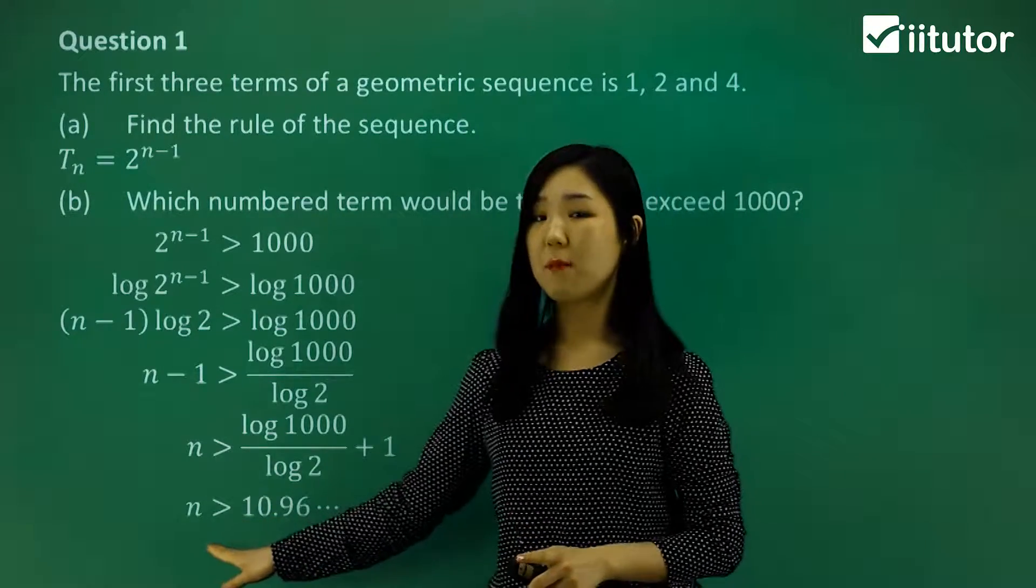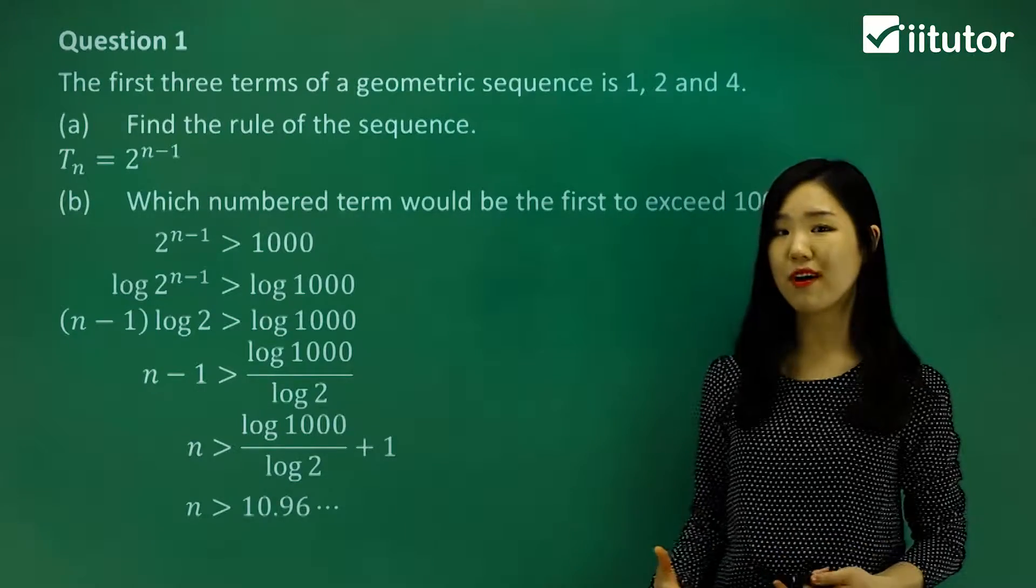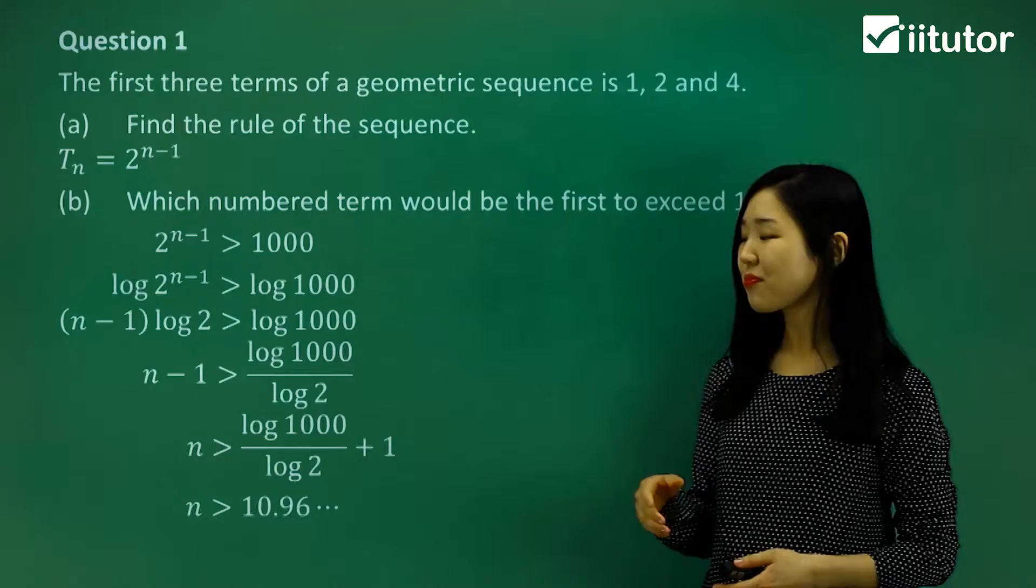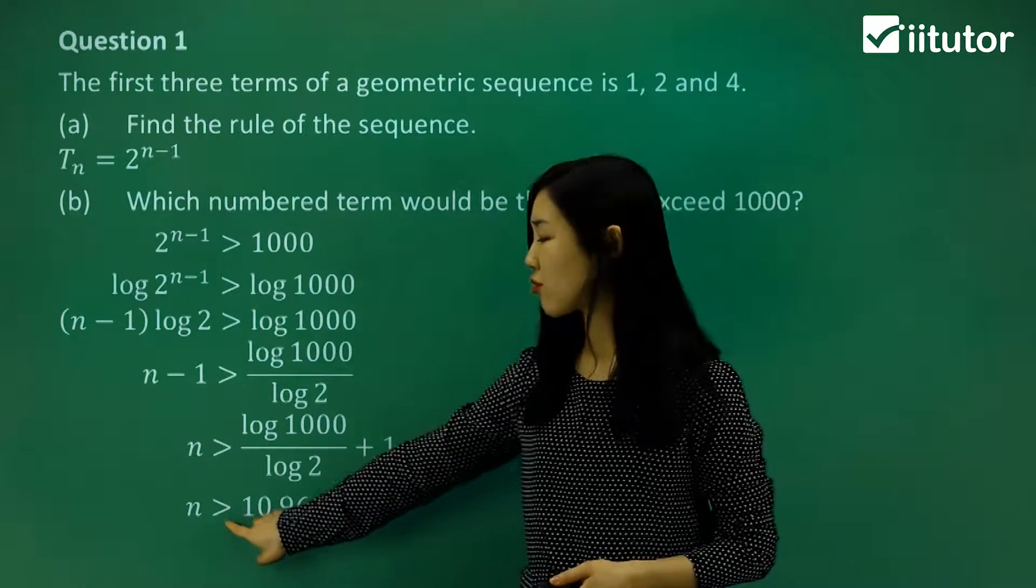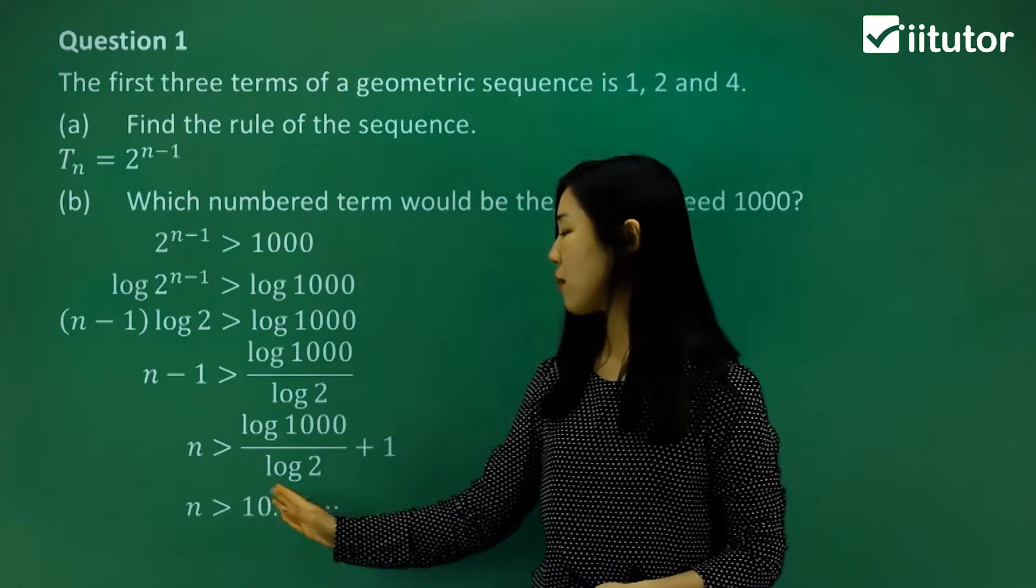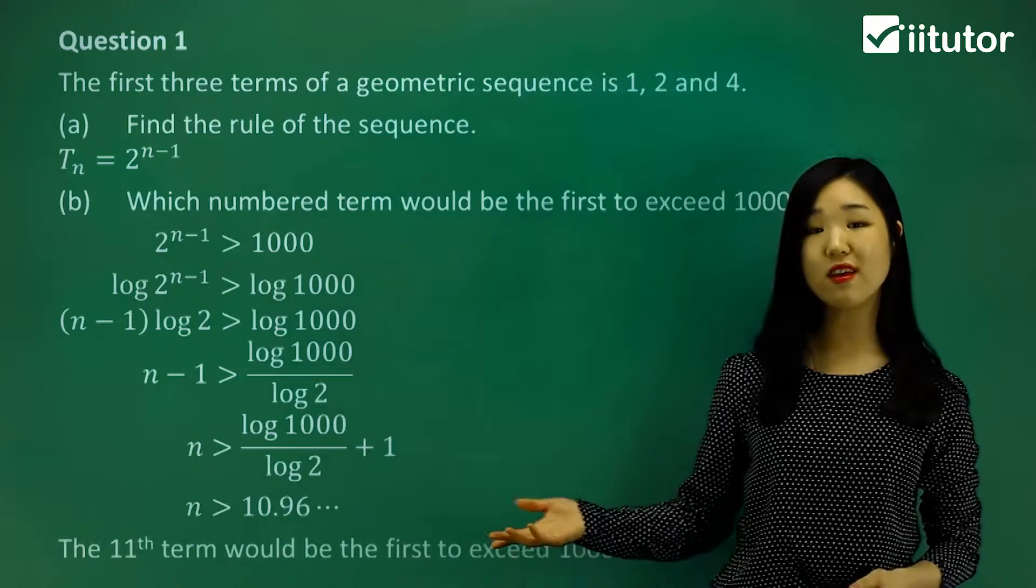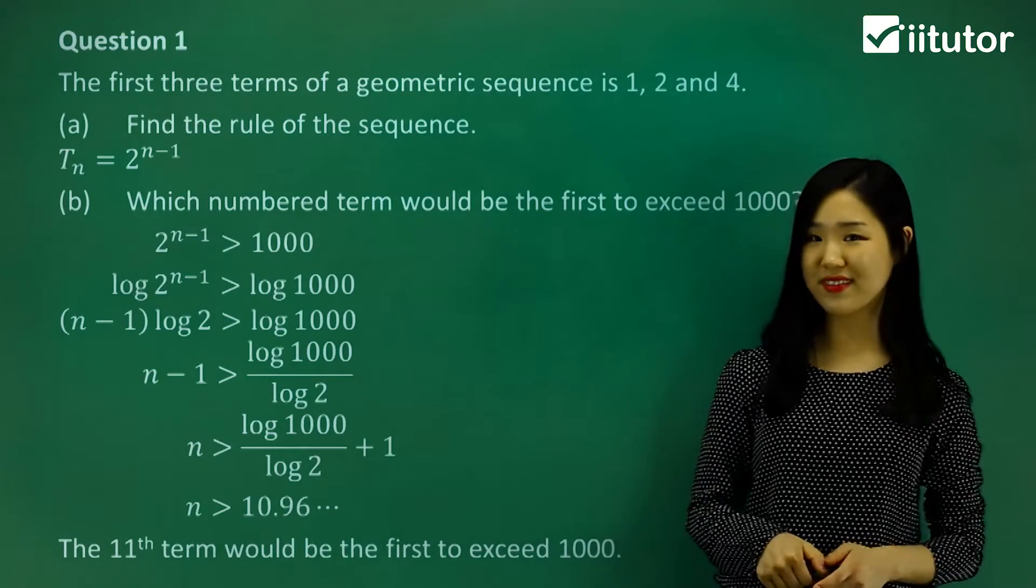Now what we want is to find n, but n must be a whole number. We have to have a whole number of terms. So we have to make sure that n is a whole number. So what's the first whole number that's greater than, so we want the one that's greater than. What's the first whole number greater than 10.96? Must be 11. So we can say that the 11th term is the first to exceed 1000.